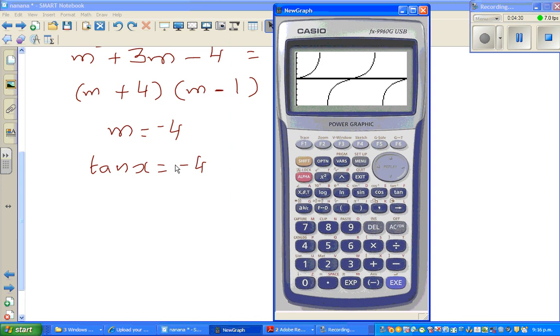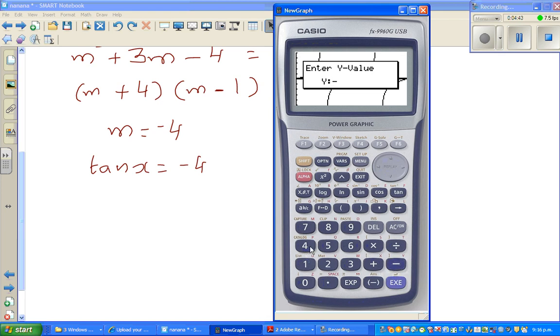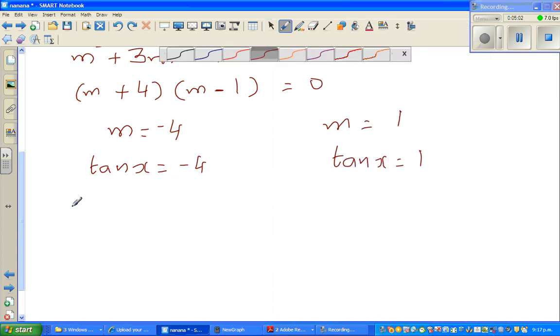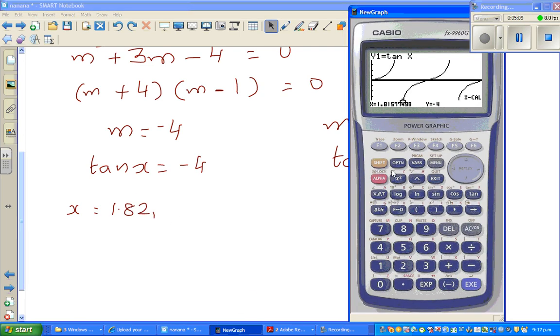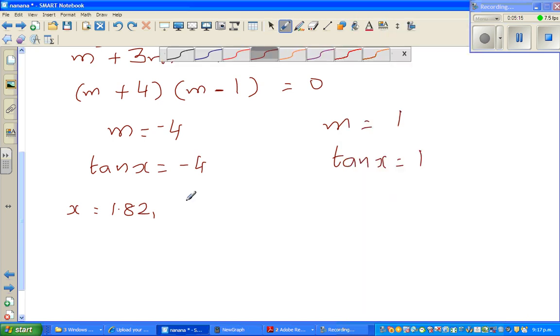The first part is, we're asking when is tan x = -4? That means this is your y value; we want to find the x. So g-solve and x-calc when y is -4. If this is an exam question, you need to show how you get this, but you can refer to my other videos. One answer is x = 1.82. What's the other answer? The other answer is 4.96. So here you've got two answers.